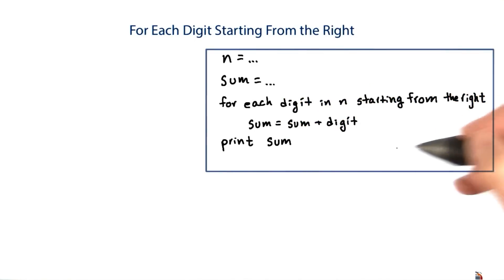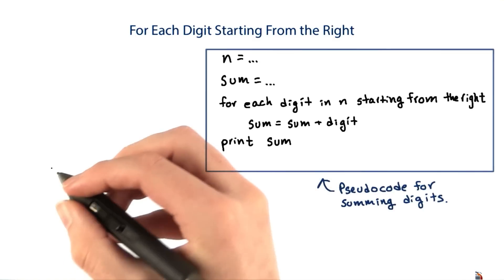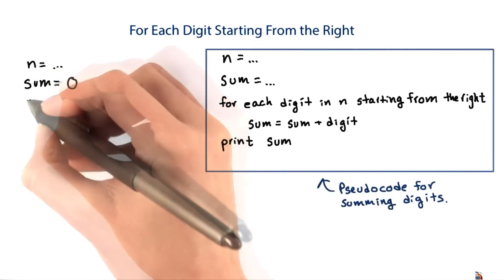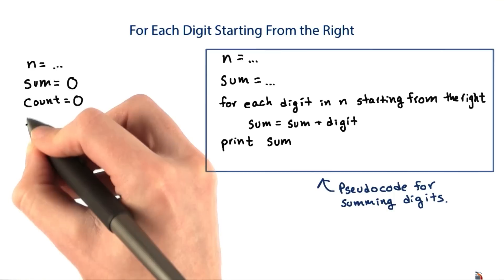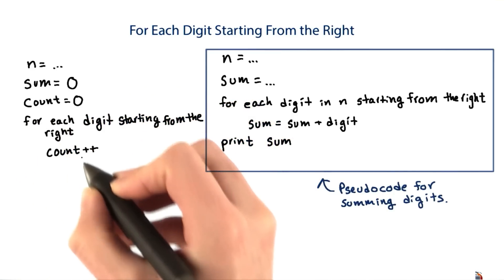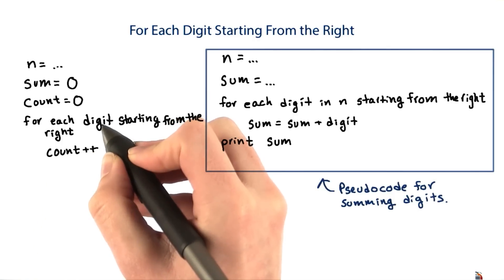Now, this pseudocode that you're looking at is very similar to the pseudocode for verifying a credit card number. The pseudocode for verifying a credit card starts by setting n and sum, and it also sets a count. Then for each digit, again starting from the right, it increments the count, and then uses the count to determine what to do with the digit.